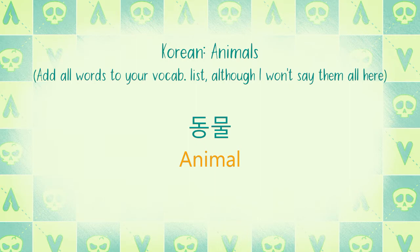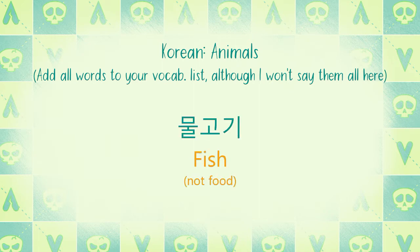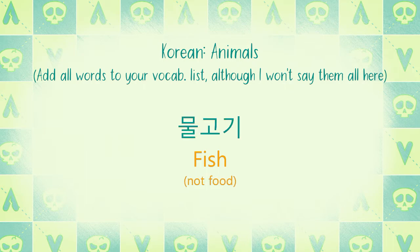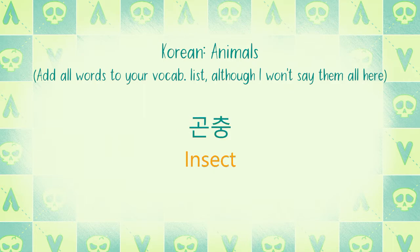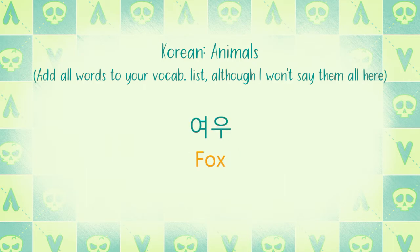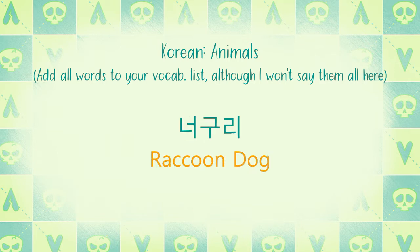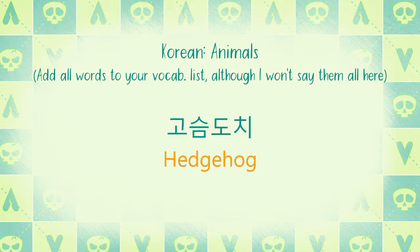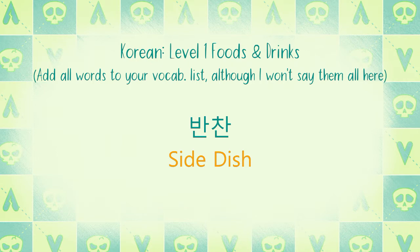동물 닭 오리 양 사슴 물고기 생선 — 생선 is used for fish that are thought of as food. 생선 you would eat; 물고기 you would not eat. 고부기 게구리 껌충 부엉이 눅대 여우 코끼리 원숭이 노구리 고슴도치